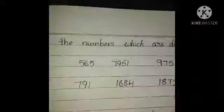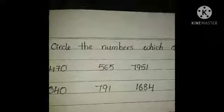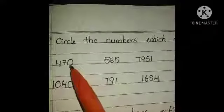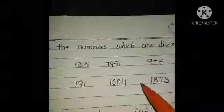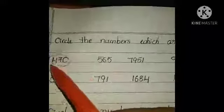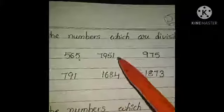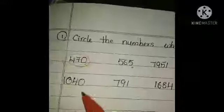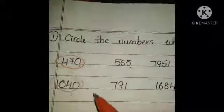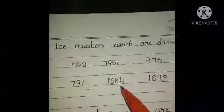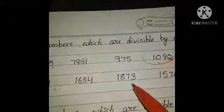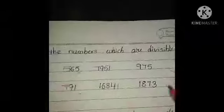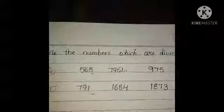Circle the numbers which are divisible by 10. Divisibility rule for 10: if the 1's place has 0, that number is exactly divisible by 10. Check each: this one has 0 in 1's place — divisible, circle it. Here 5 — not divisible. Here 1 — not divisible. Here 5 — not divisible. Here 0 in 1's place — divisible, circle it. 1040 — circle it. This one's 1's place is not 0 — not divisible. 1684 — not divisible. 1873 — not divisible. 1570 — divisible, circle it. Remember: if 1's place has 0, that number is exactly divisible by 10.